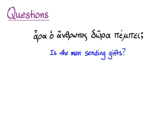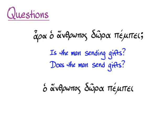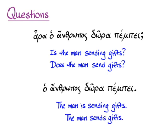So 'ara ho anthropos dora pempei' means 'is the man sending gifts?' which English can also express as 'does the man send gifts?' Without the question mark and 'ara,' the same word order is simply the statement 'the man sends gifts' or 'the man is sending gifts.' Greek, unlike English, doesn't have to change word order to make a question. English uses helping verbs, but Greek just adds a question mark and occasionally 'ara' to alert you.